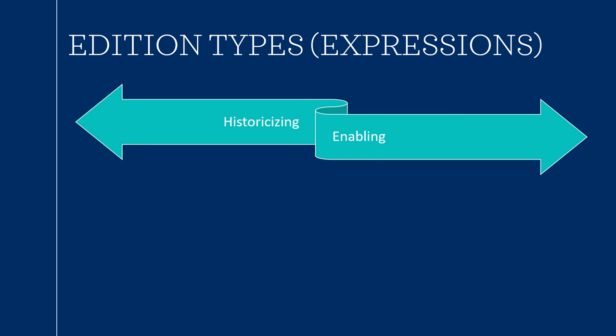On one end of the spectrum are editions focused on recreating the work as closely as possible to what the editor believes is the composer's intention. On the other hand, there are editions like those that Bruda describes as enabling — that is, editions intended to make the work accessible and usually performable by a wider audience.